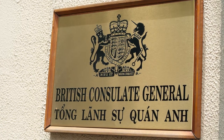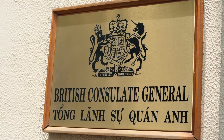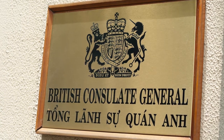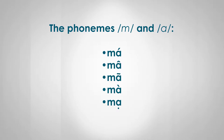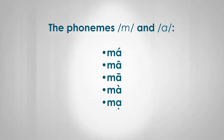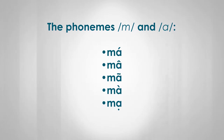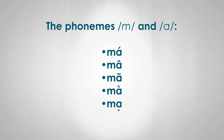Languages that apply tone at the word level, like Vietnamese or Chinese, are referred to as tonal languages. In Vietnamese, phonemes combine to form a morpheme, and the addition of one of the five tones in Vietnamese turns it into five totally different words — words that to a native speaker don't sound or mean the same.